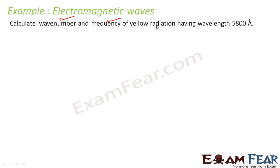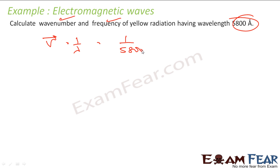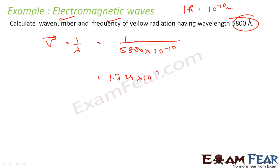We need to find the wave number and frequency of yellow radiation having a wavelength of 5800 Å. Wave number = 1/λ = 1 / (5800 × 10⁻¹⁰ m). Solving this gives 1.724 × 10⁶ per meter — and that is the answer.